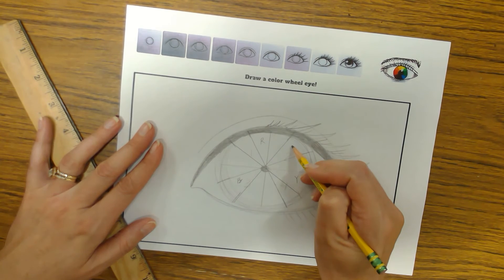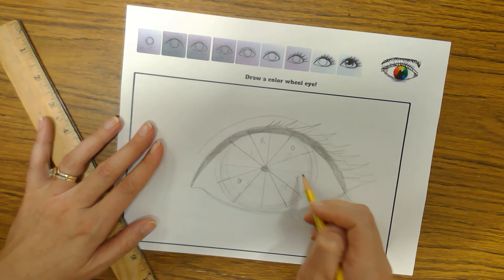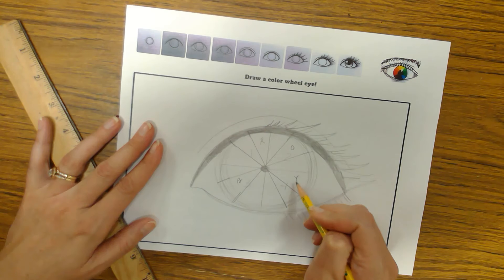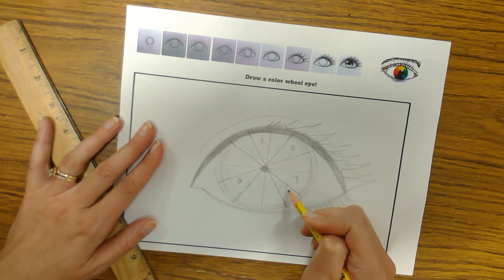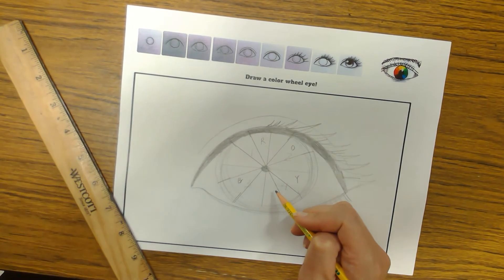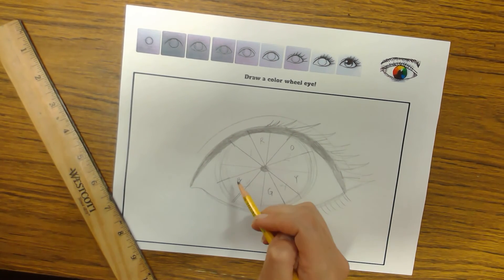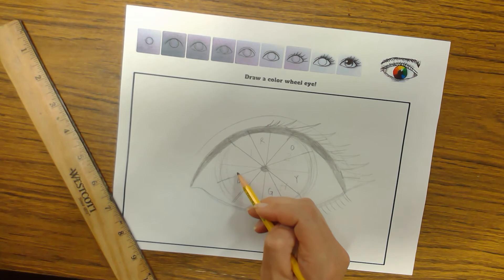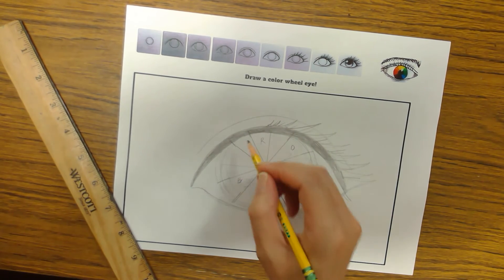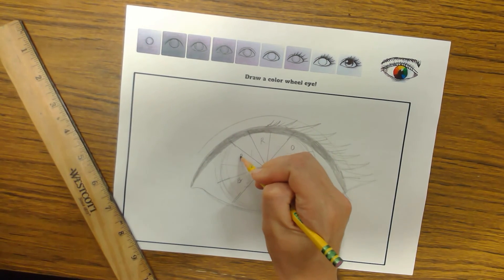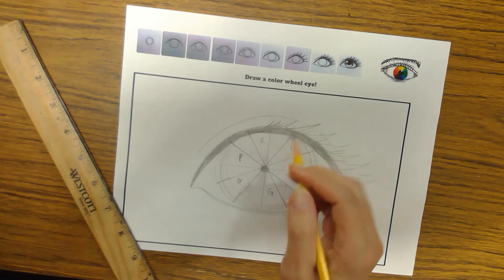Then we're going to skip every other one for the secondary color. So this is blank. This is O. Go to the Y. The next one will be blank. This one will be G for green. B for blue. Leave a space. We're going to do P for purple.